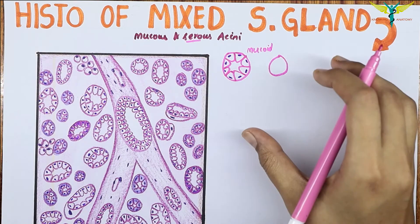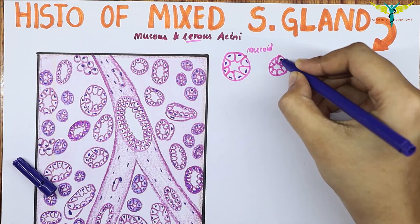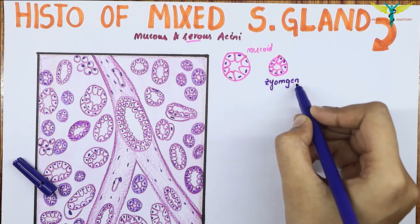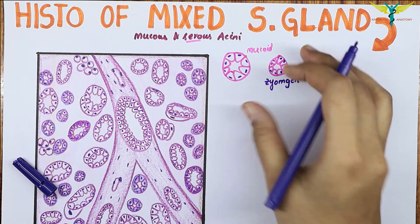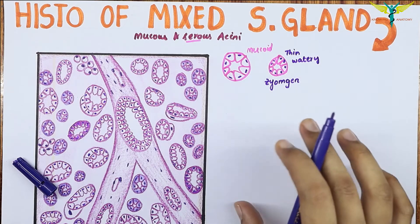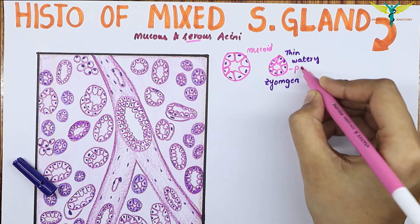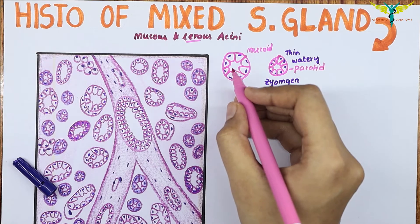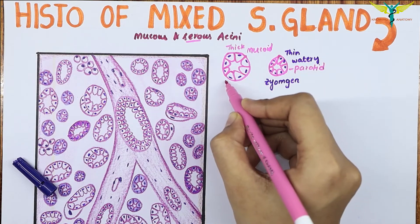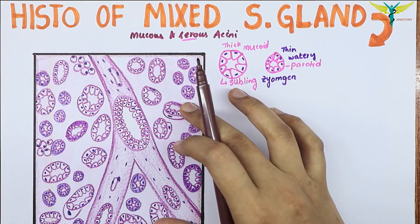Coming to the serous acini, the serous acini are triangular cells with a rounded nucleus at the base and their boundaries are indistinct. These serous acini contain zymogen granules and secrete thin watery secretion. The serous acini are mostly present in the parotid type of salivary gland.